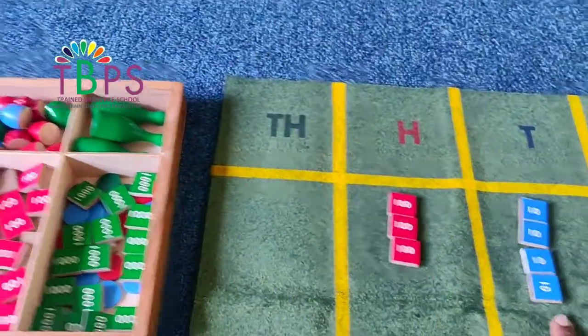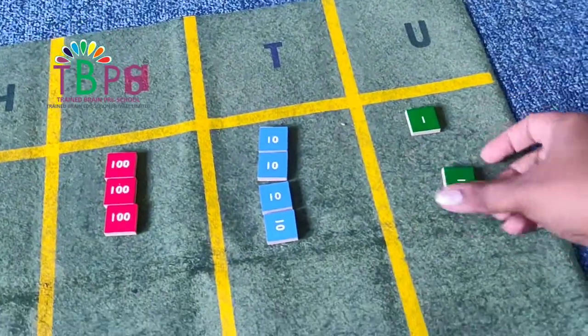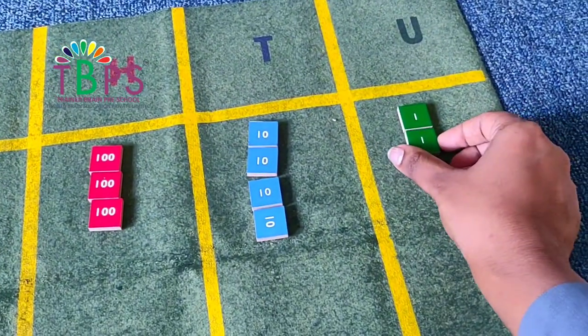So I have four tens, and then two ones. So let me pick two ones over here. For the child, they will be picking one at a time, so you will be picking two ones.